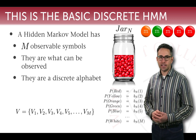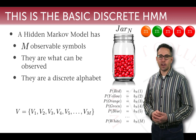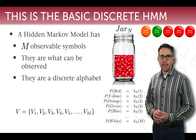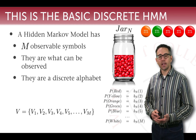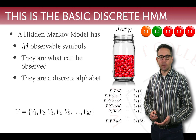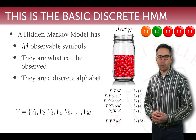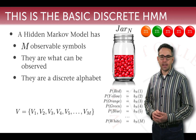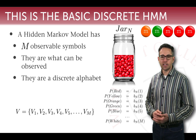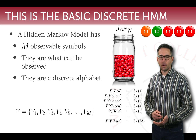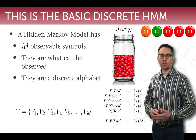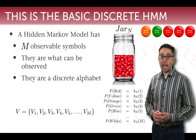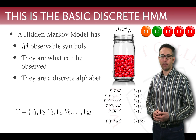We represent the set of observations as capital V, drawn from the alphabet v₁, v₂, v₃, up to vₘ. So v₁ might be red, v₂ yellow, v₃ orange, and vₘ would be white in this example.